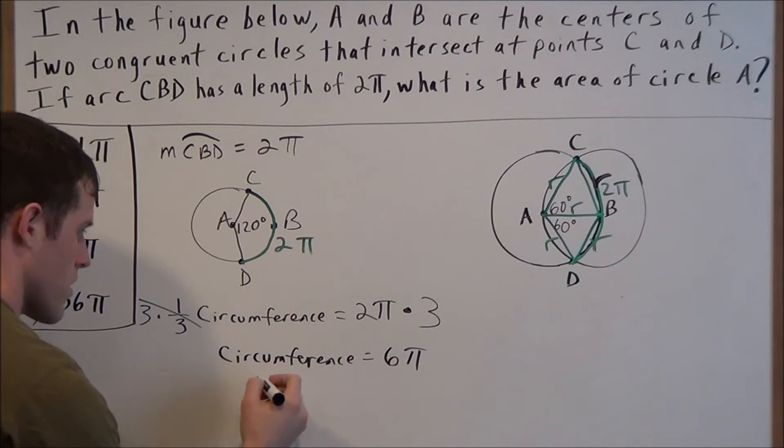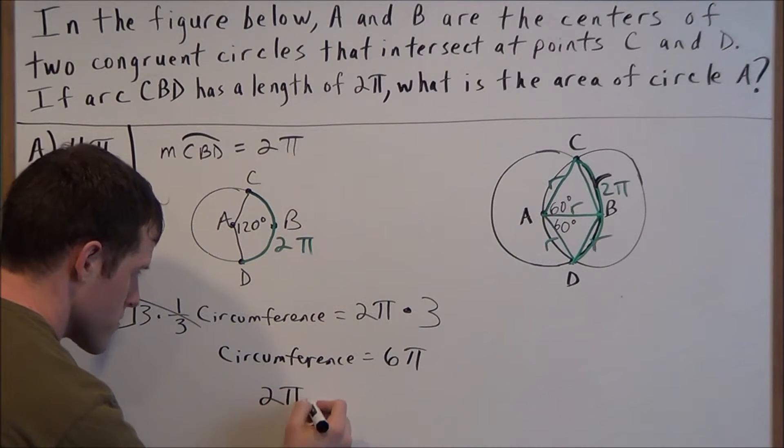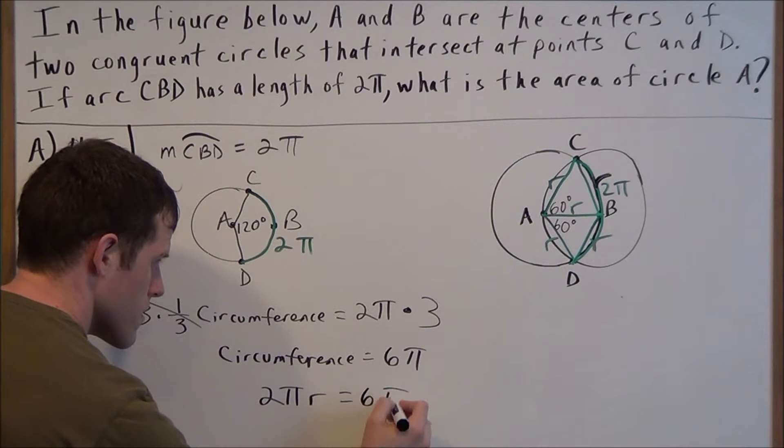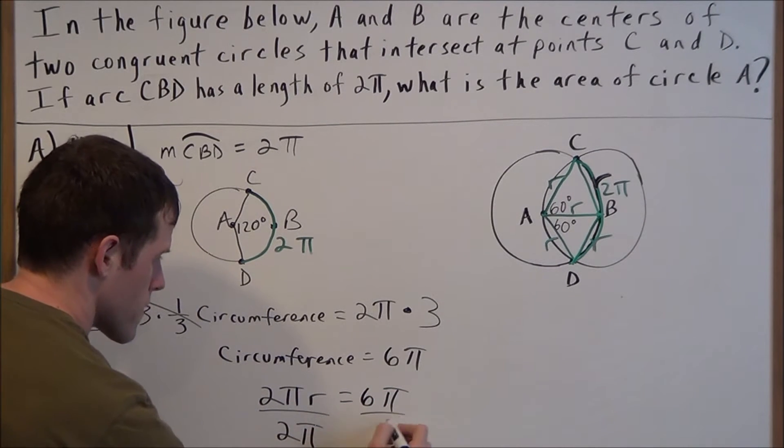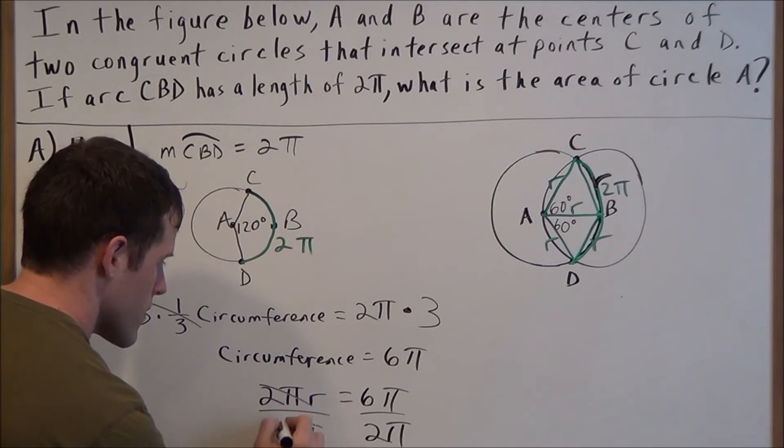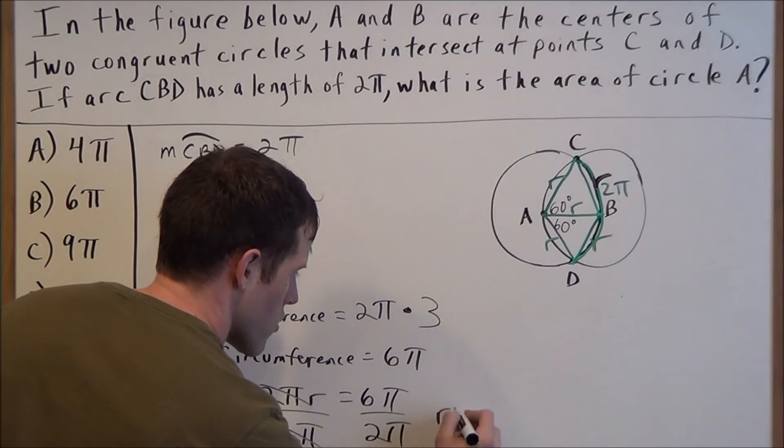And if we use the formula, the circumference of a circle is 2π times the radius, this tells us the radius of circle A. So we divide both sides by 2π, and this tells us that r is equal to 3.